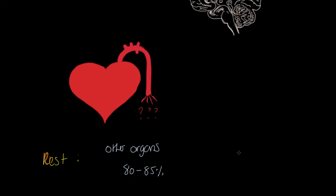If we then consider the working muscles specifically, we can determine that 15 to 20% is going to those muscles. You might be thinking: at rest, what are the working muscles? Well, they're your postural muscles, your breathing muscles - for example, the muscles in your neck that hold up the posture of your head. These are working, they are respiring, and they're doing that work.